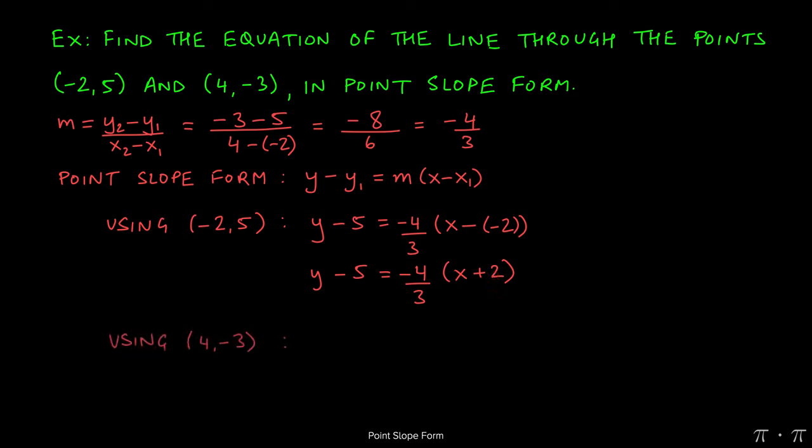On the other hand, if we had used the other point 4 comma negative 3, we would just make the appropriate replacements. Y minus y1 which is negative 3, equals m which is negative 4 thirds, times the quantity x minus x1 which for us is 4.